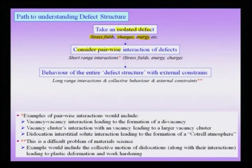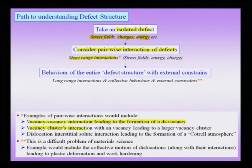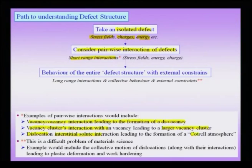Once I have a reasonable handle on the isolated defect, I can consider pairwise interactions of defects, which essentially involve short-range interactions. Examples include a vacancy-vacancy interaction leading to the formation of a divacancy, a vacancy interacting with a cluster leading to a larger vacancy cluster, or the interaction between a dislocation and an interstitial solute leading to segregation of solutes along the core of a dislocation — the Cottrell atmosphere — and how such associations lead to changes in properties.